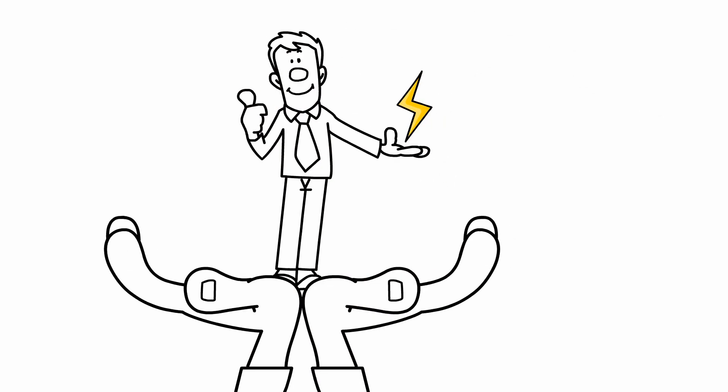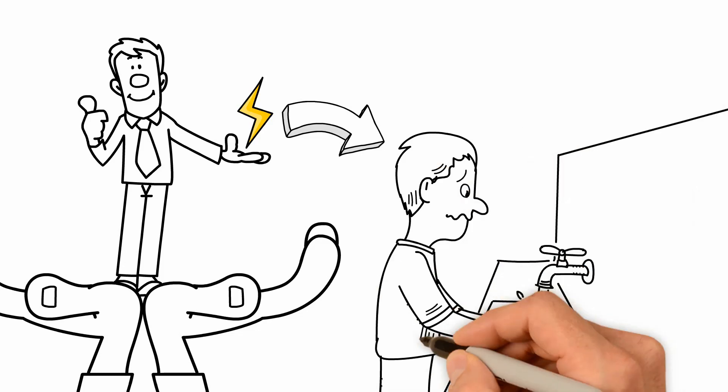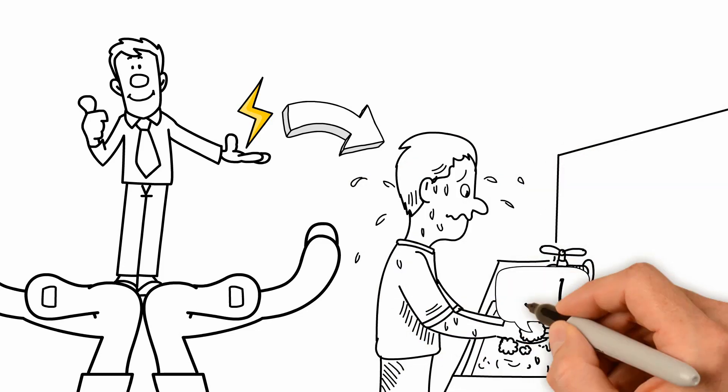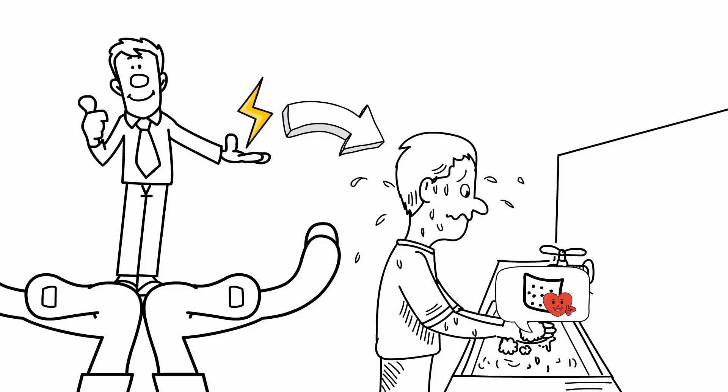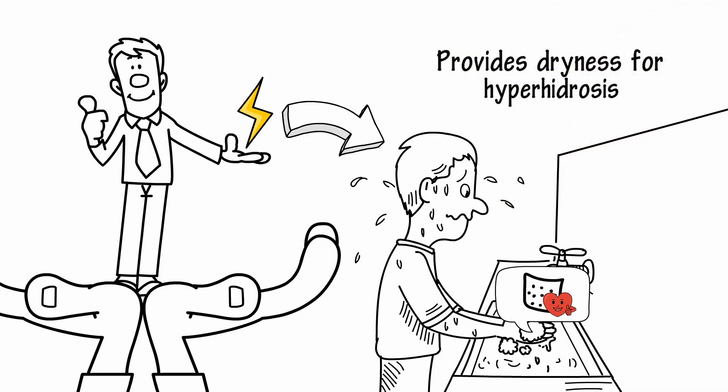Iontophoresis is the process of using an electrical current to deliver the natural minerals found in tap water into your sweat pores, plugging them up to create a long-lasting barrier. The treatment provides dryness for patients struggling with hyperhidrosis, aka excessive sweating.